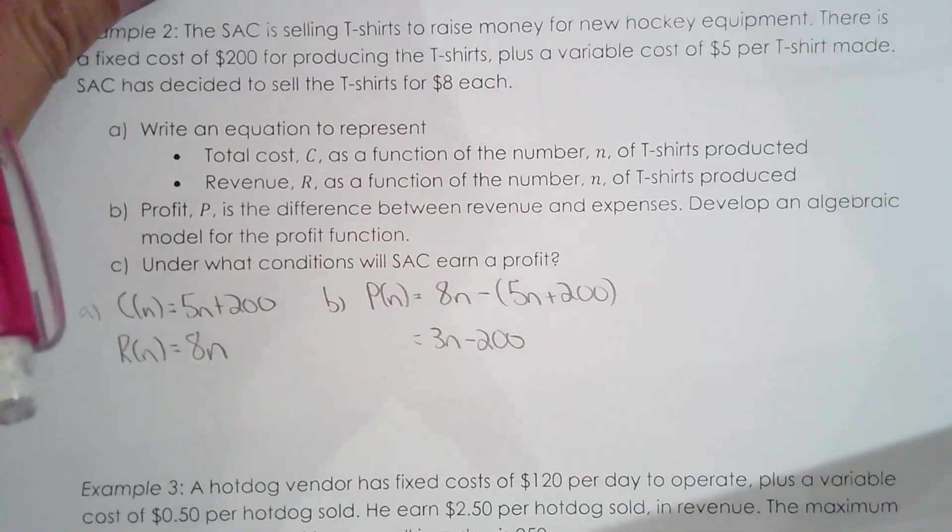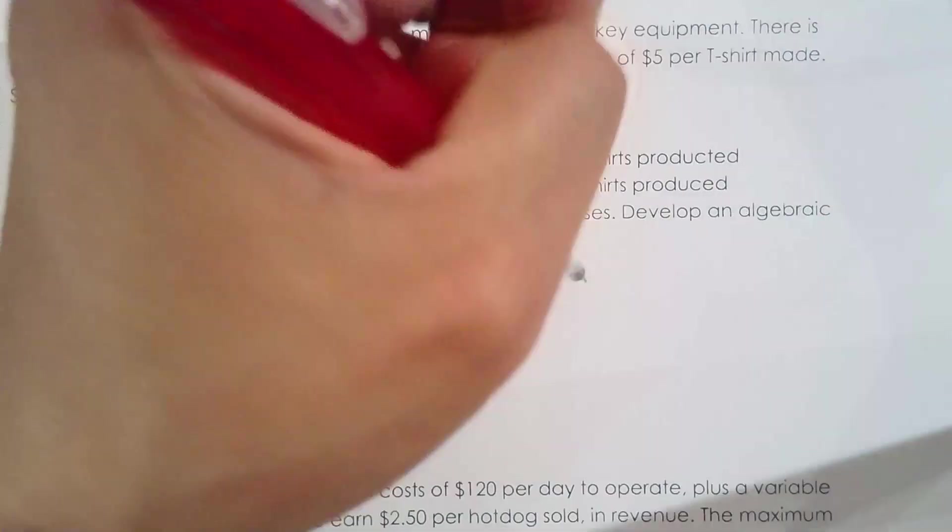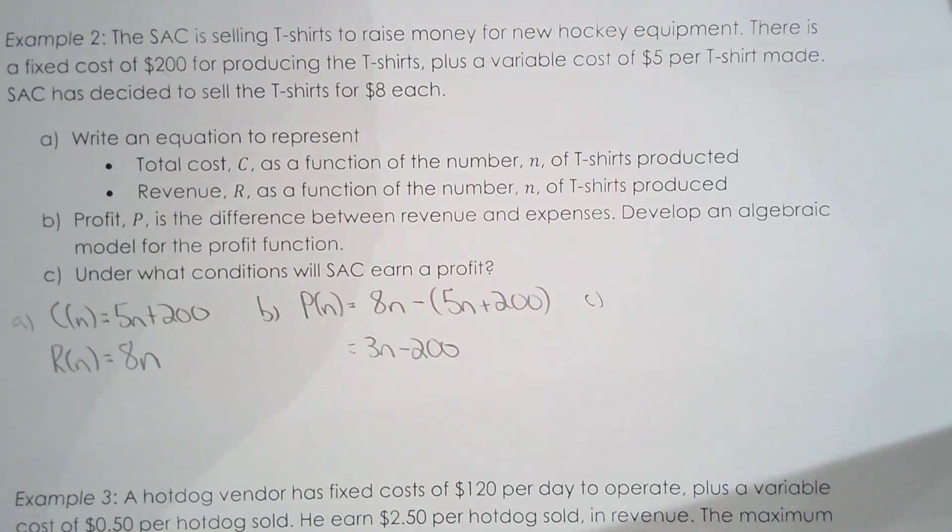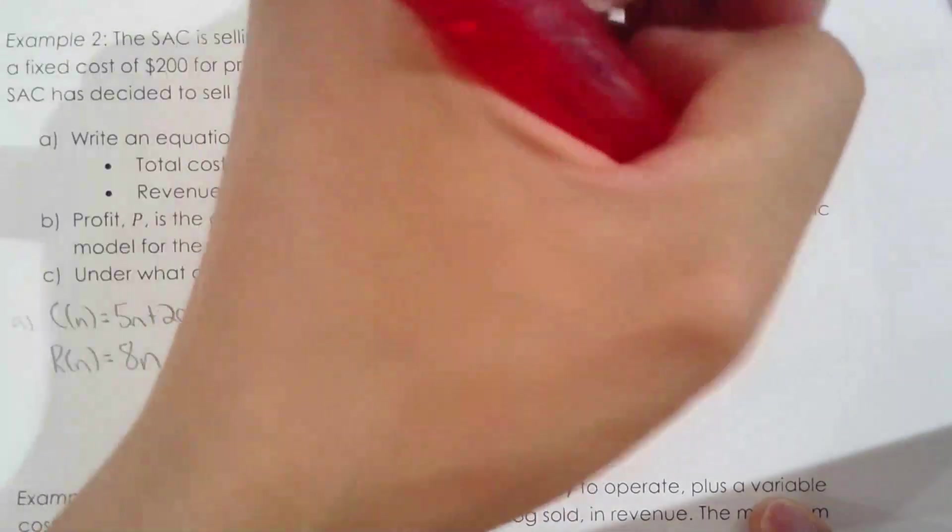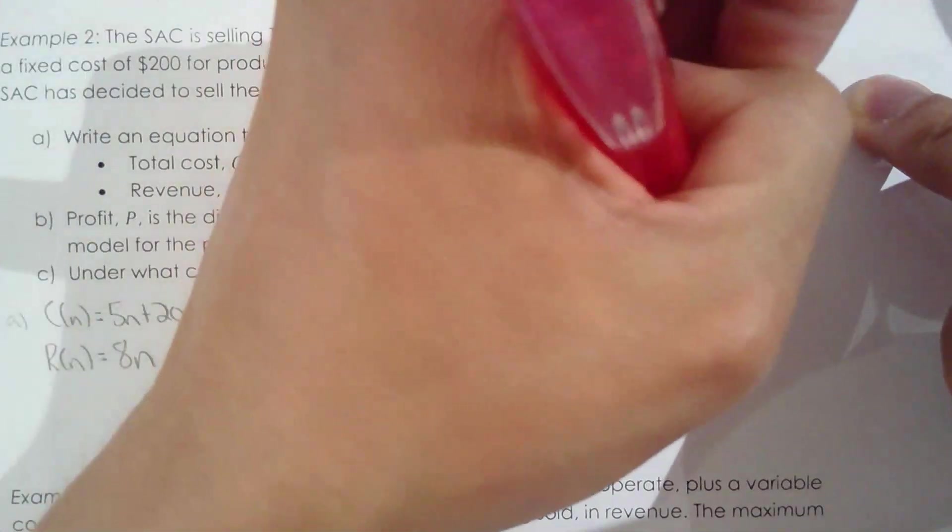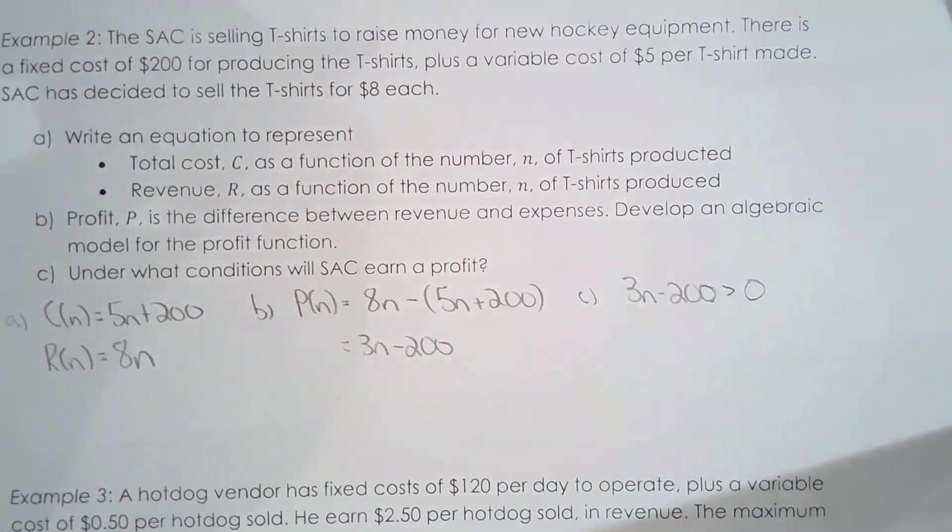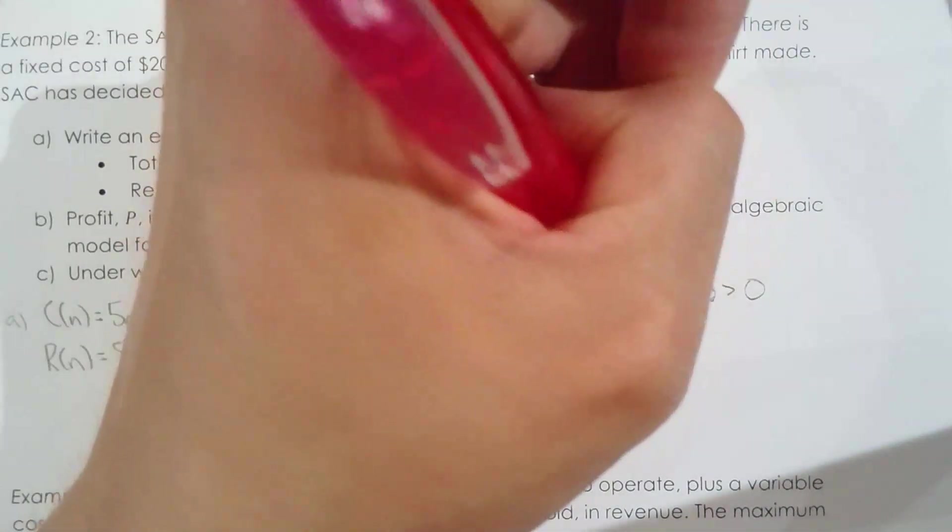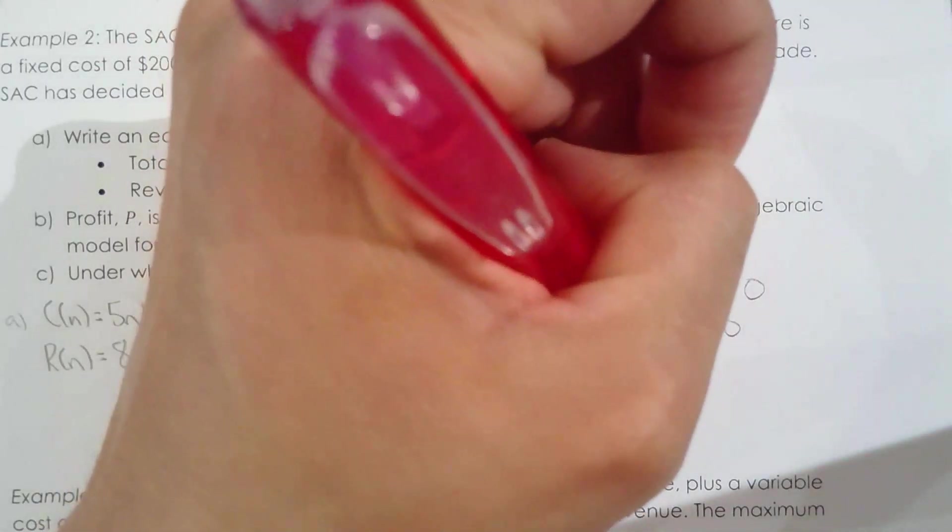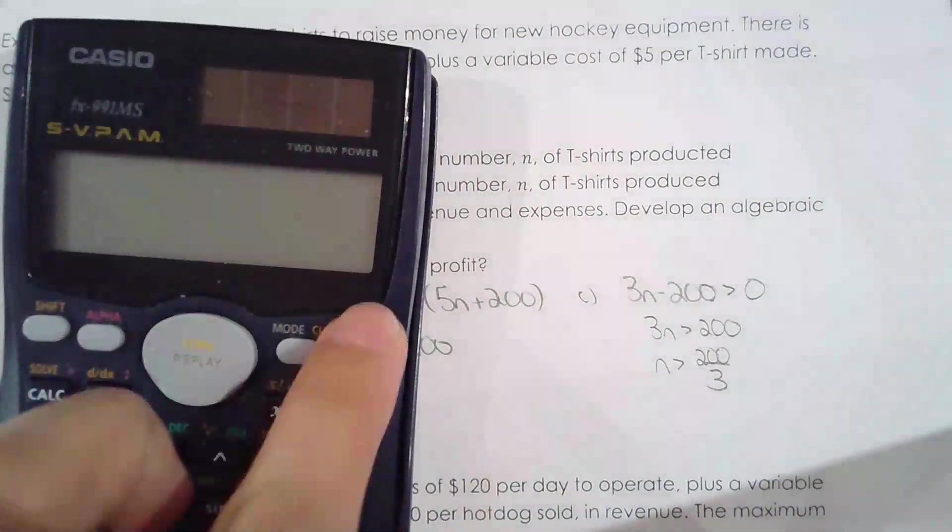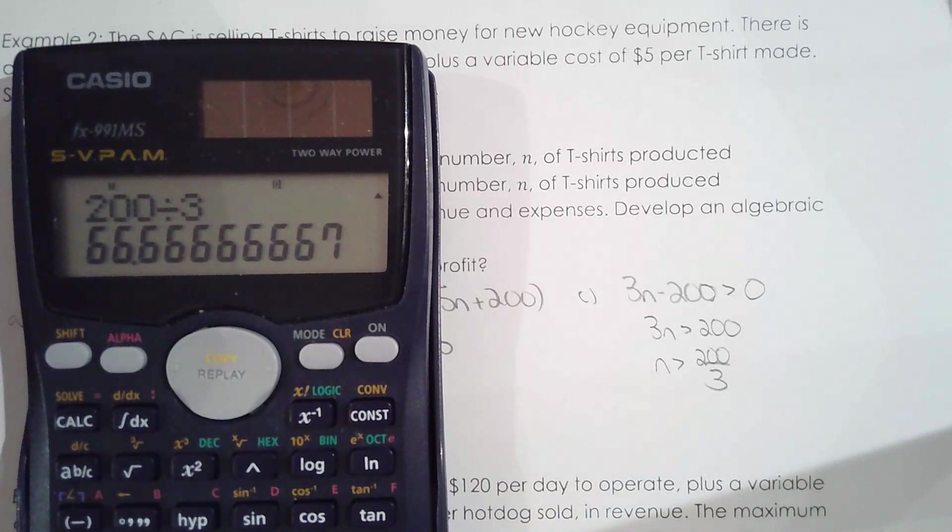Under what conditions will SAC earn a profit? Essentially, we have to ask ourselves: how many t-shirts must they sell? Now we're looking at an inequality, and luckily, this is a linear inequality. I'm trying to look for when profit is greater than zero. I'm solving a linear inequality here. 3n is greater than 200, divide both sides by 3, n is greater than 200 over 3. If we take a look at our calculator, 200 over 3 is 66 and two-thirds.